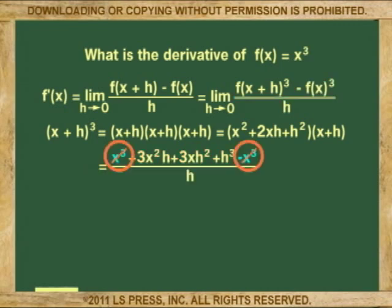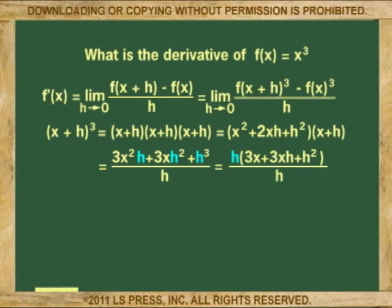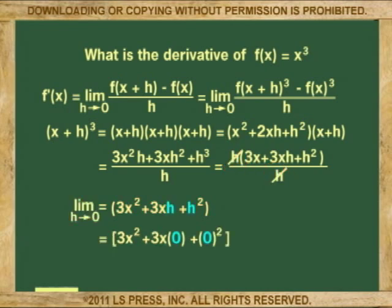We continue by subtracting x cubed divided, of course, by h. Both x cubed cancel and the h in the trinomial gets factored out. The factored h cancels with the h in the denominator. We are left with 3x squared plus 3xh plus h squared. Now, because we want the limit of h approaching zero, h becomes zero and the outcome is 3x squared.